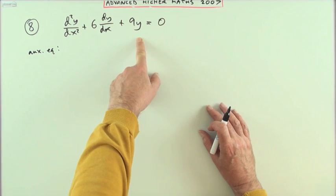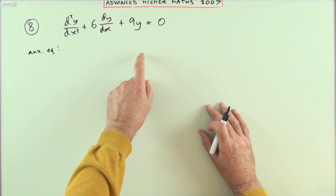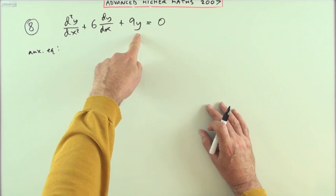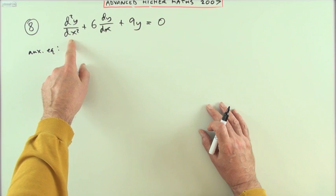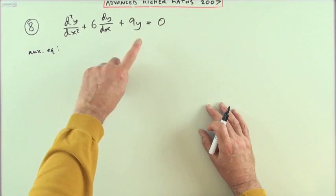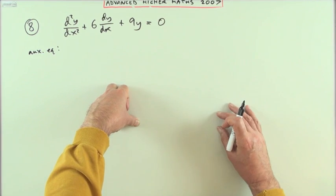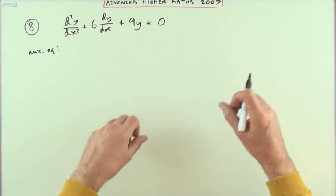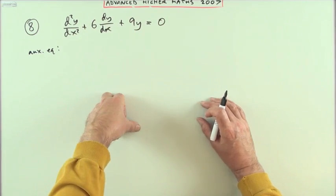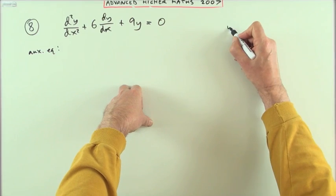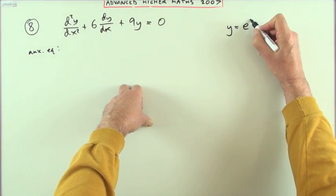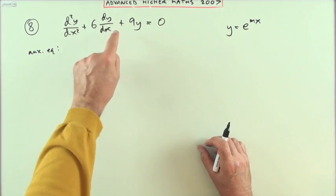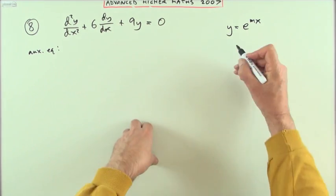A quick note about why this happens: this type of equation can only be solved for a certain type of function. There's only one type of function whose derivatives are sufficiently similar to knock each other out to zero - that's the exponential. Of course, sines and cosines work within it because they can repeat themselves. That's why in this case you're using y equals e to the mx as a potential candidate.